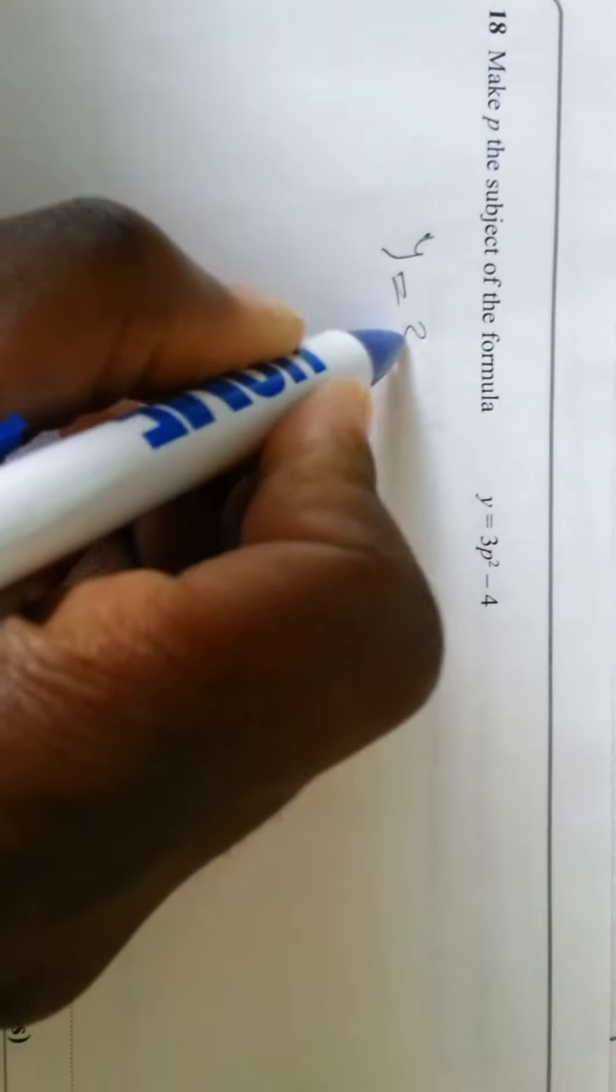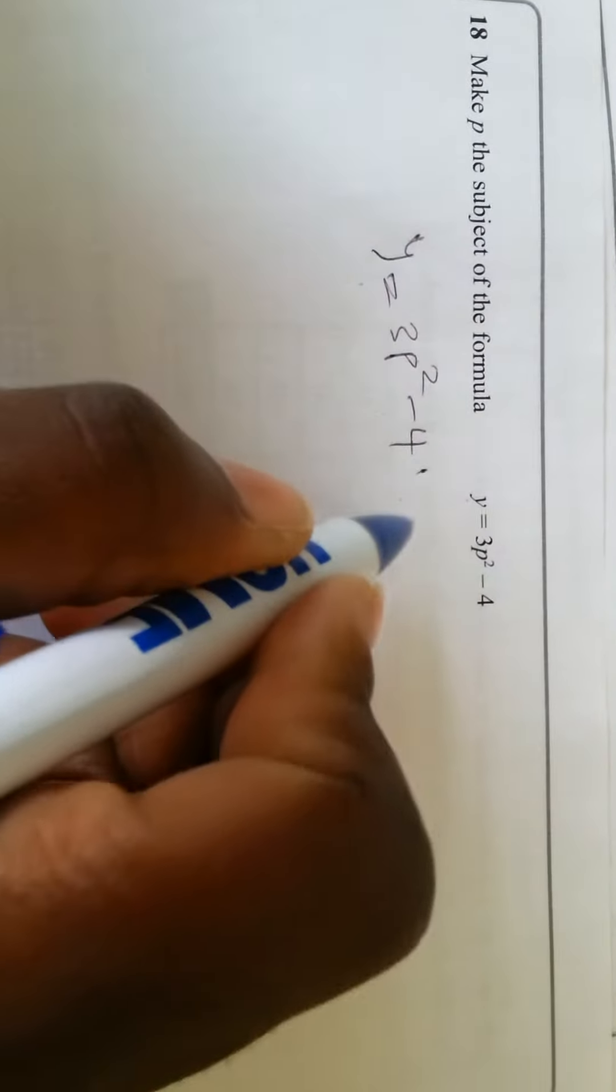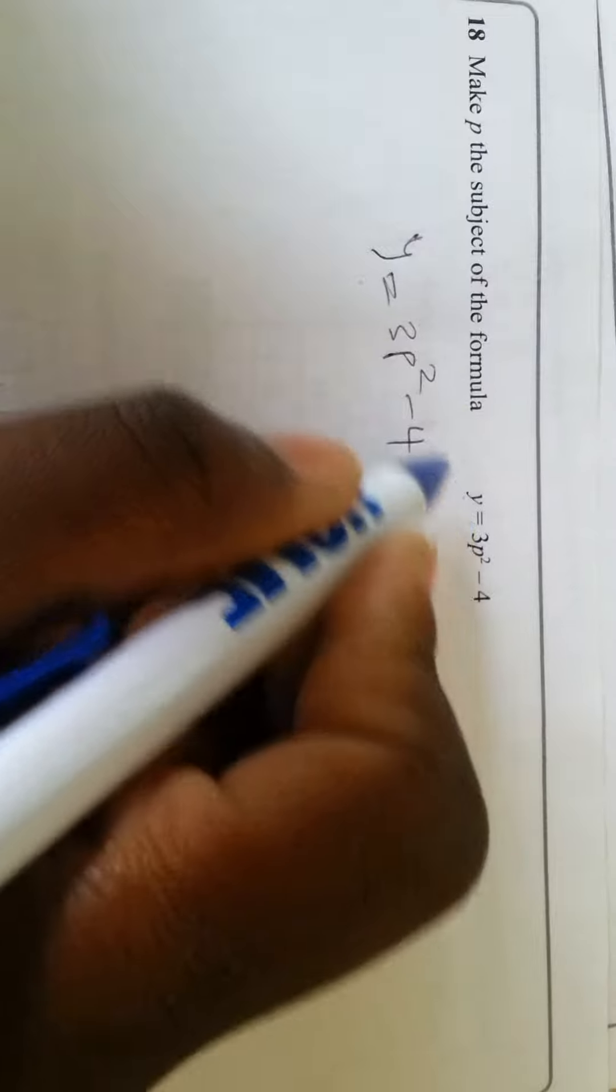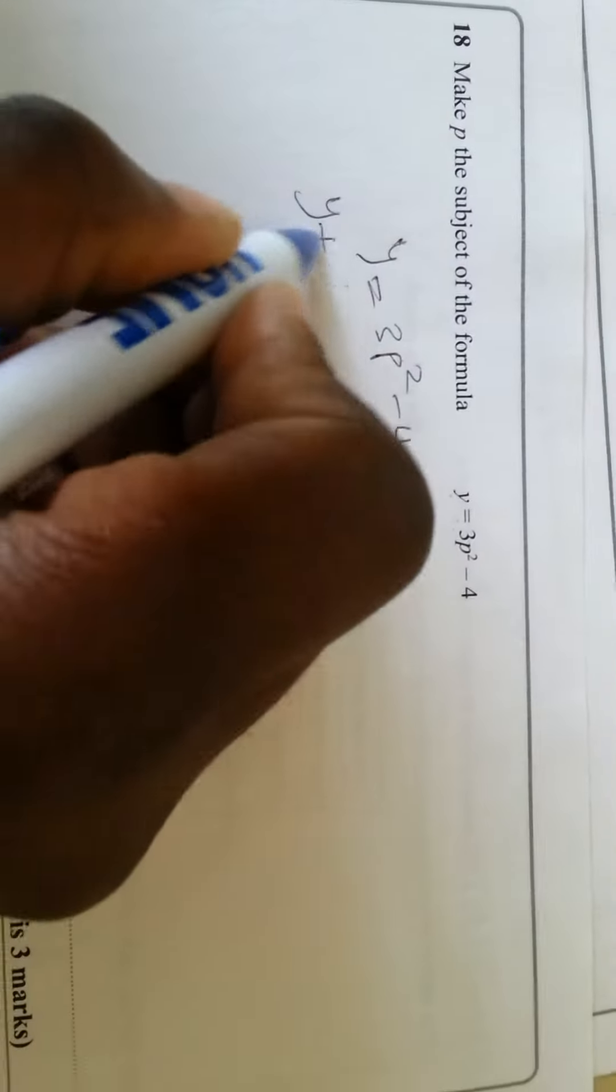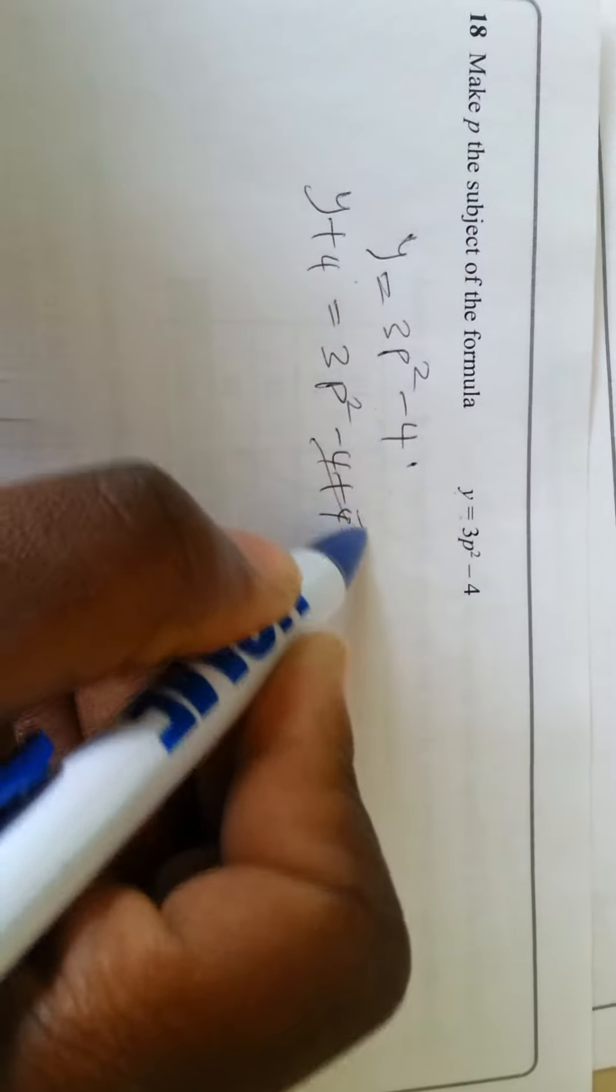We have y = 3p² - 4. Let's add 4 to both sides so that this 4 will go. You have y + 4 = 3p² - 4 + 4. This will become 0, so you have 3p² = y + 4.